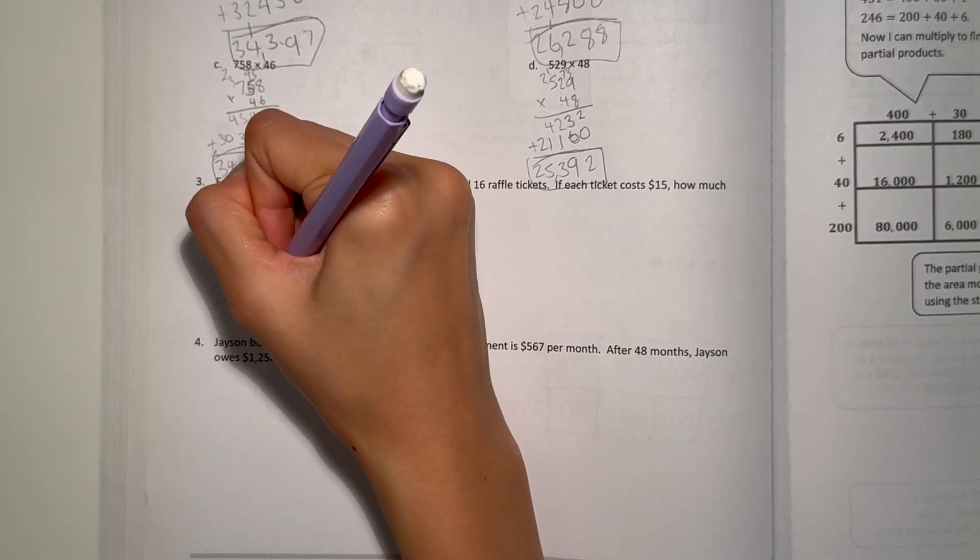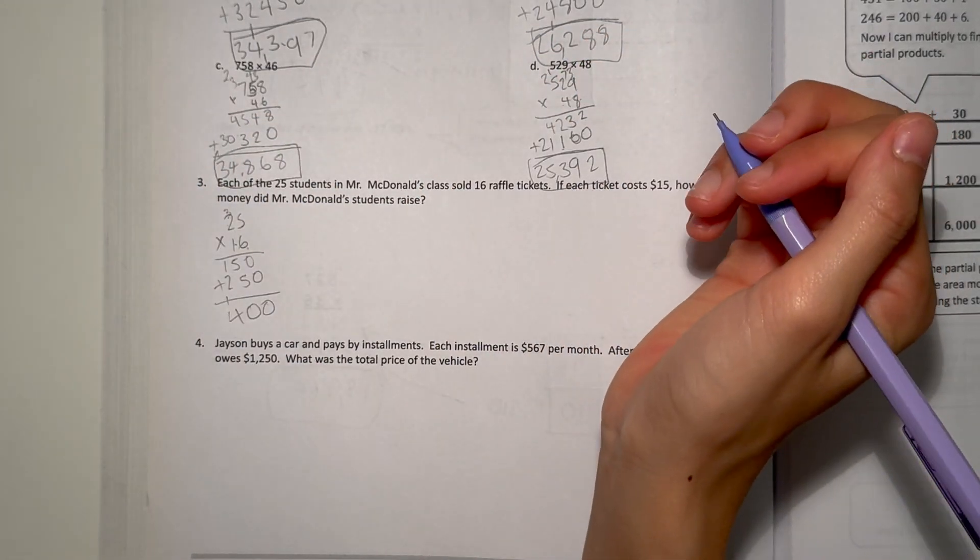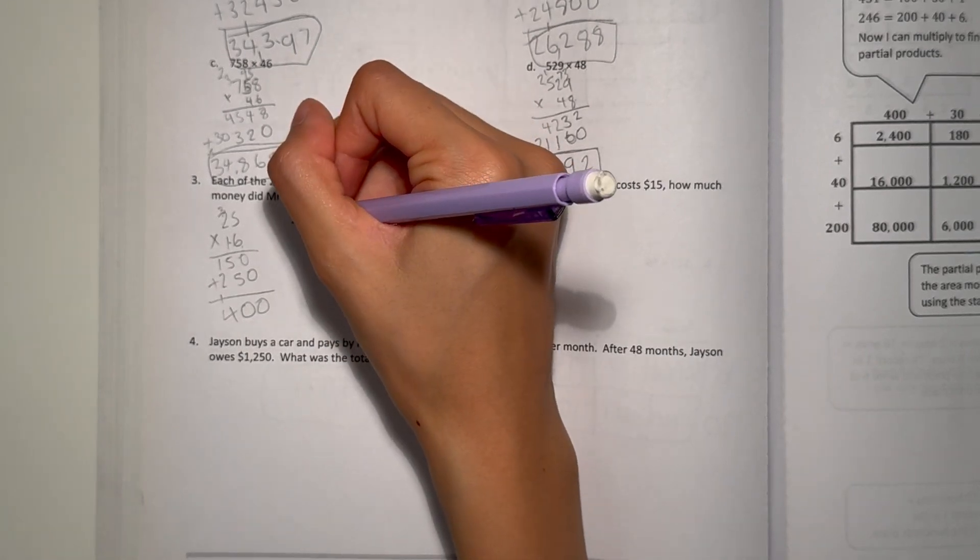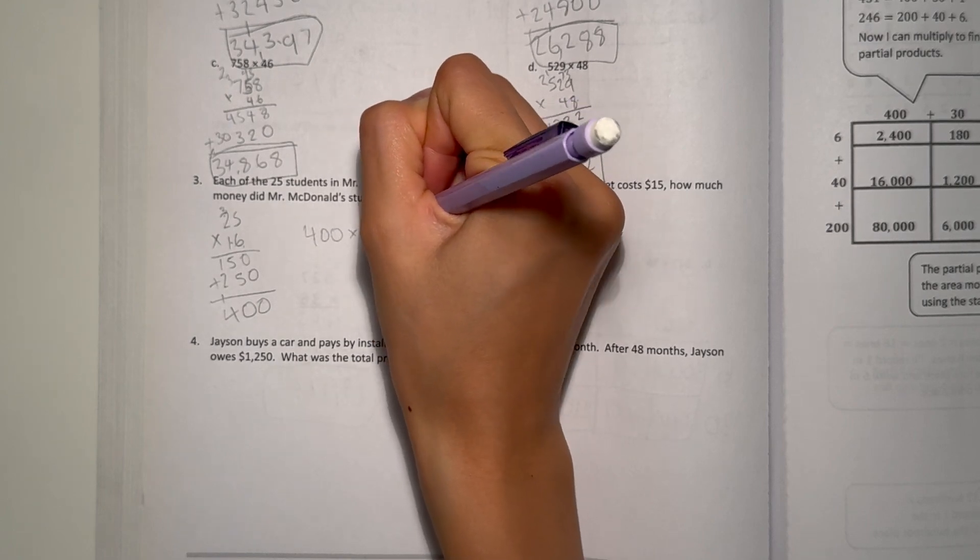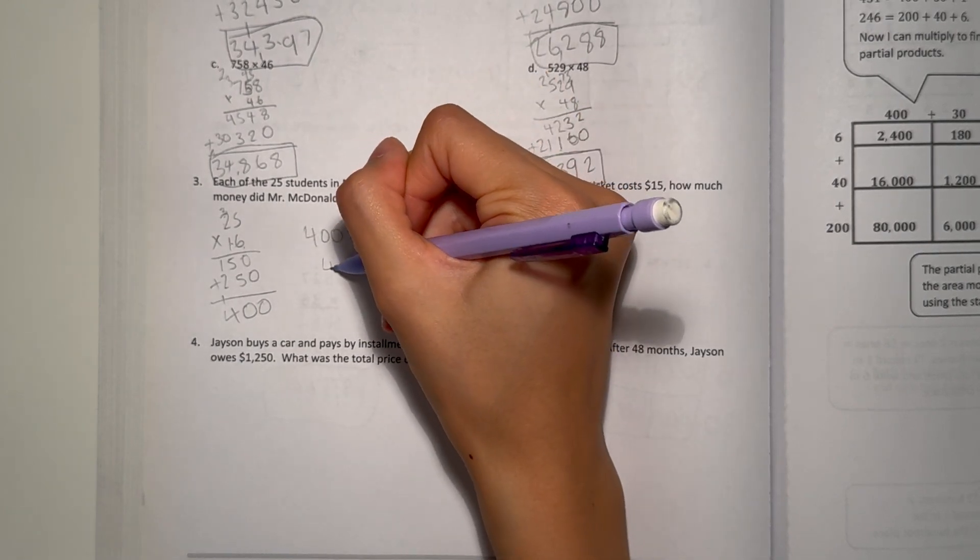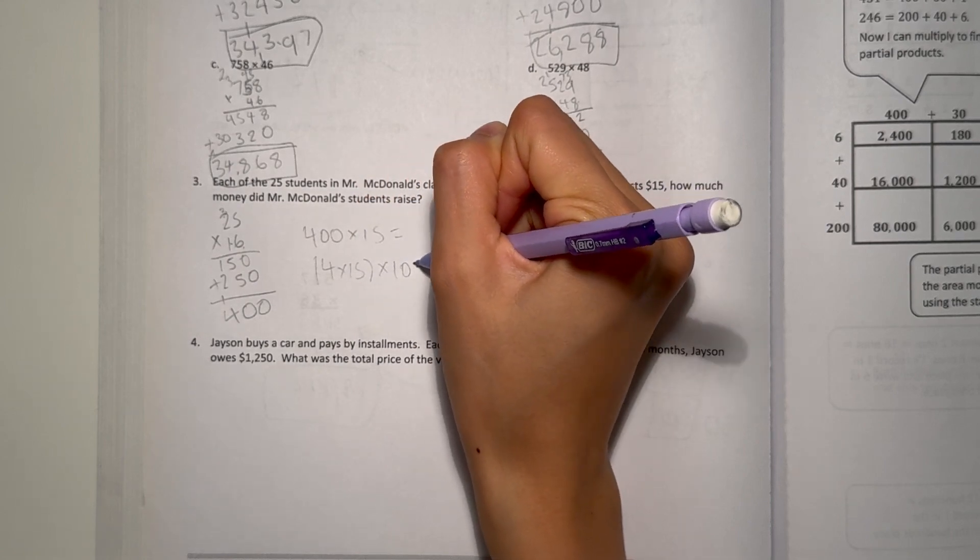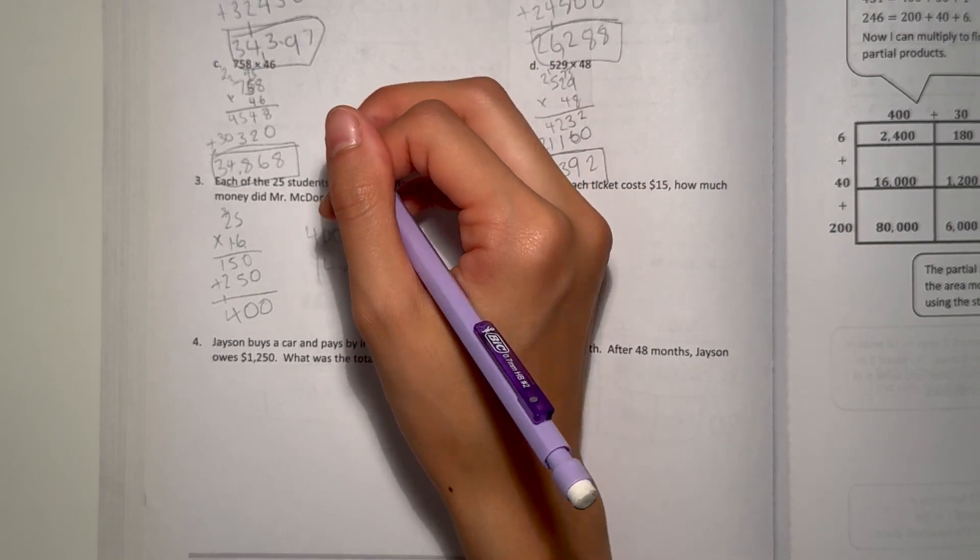We have 0, 10, and 4. So 400 raffle tickets. But we're not done yet. Each costs $15. So if we do 400 times 15, that's equal to 4 times 15 times 100. Since we're taking away 100 from, since we divide 400 by 100.